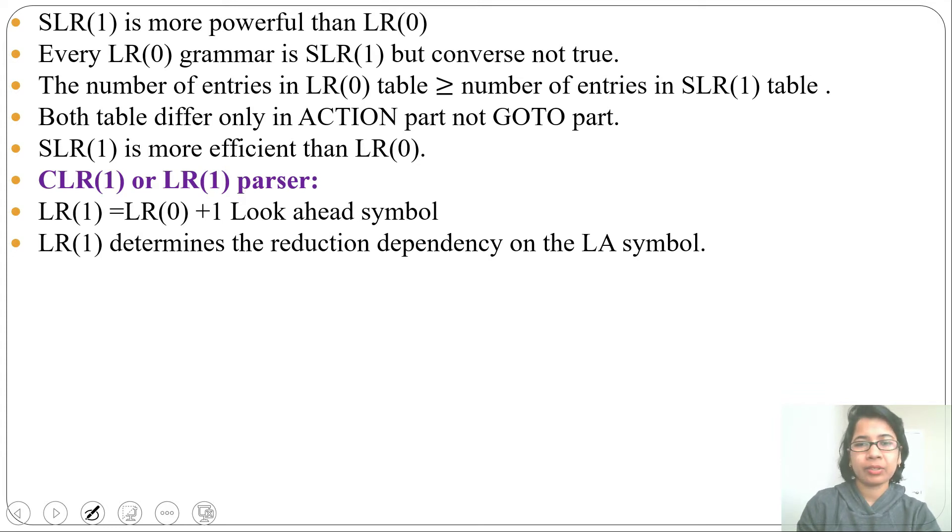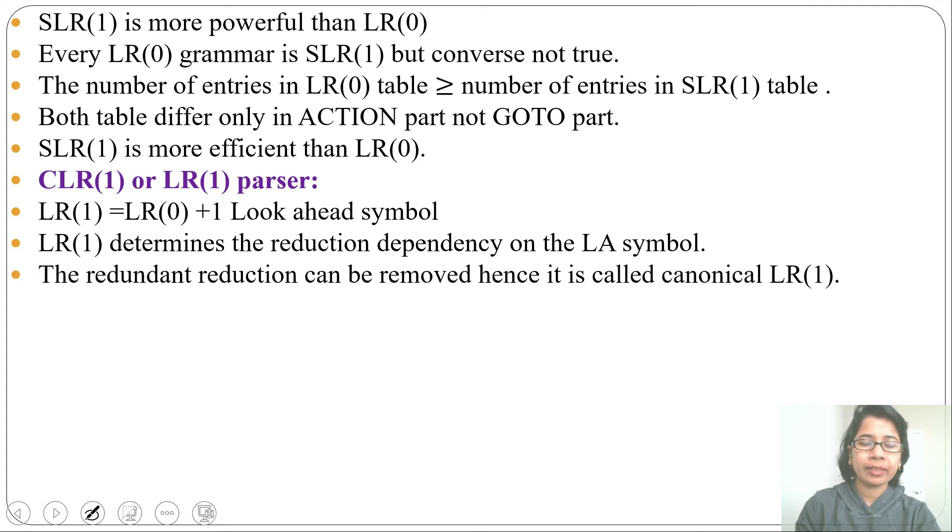We'll write reduction on lookahead symbol column. The redundant reduction can be removed, hence it is called canonical LR1. Repeated reduction can be removed here.